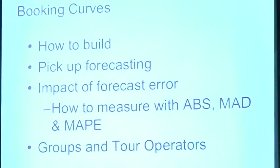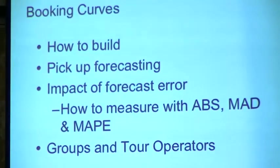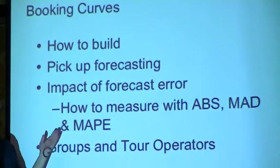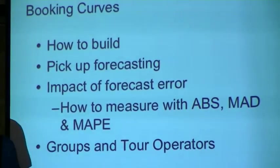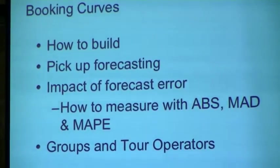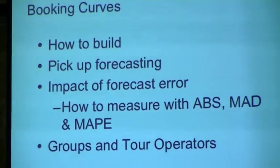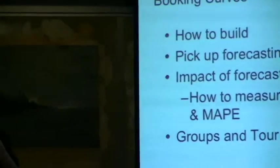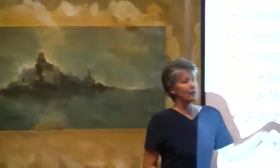So what we're going to do now is we're going to be building some booking curves using data from the past. We're going to use those booking curves to do pickup forecasting, and then we're going to validate — we're going to do a forecast validation. We're going to use mean absolute percentage error to see how accurate our forecast was, and where it wasn't accurate, what could we do to make the forecast more accurate. Remember it's the base of everything. And then we'll have a look at how we might use the same approach for our new and thoroughbred business.